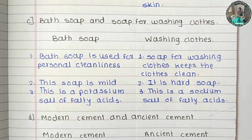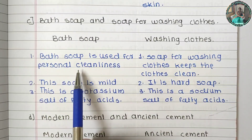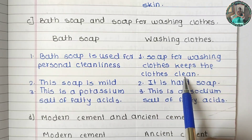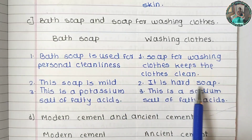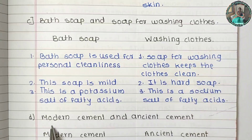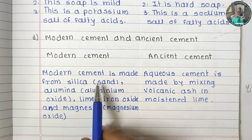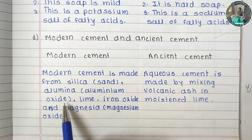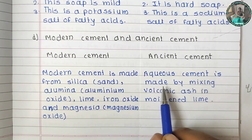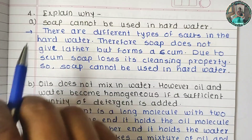Soap is used for personal cleaning and washing clothes. There are mild soaps (potassium salt of fatty acid) and hard soaps (sodium salt of fatty acid). Regarding modern and ancient cement: modern cement is made from silica (sand), aluminium oxide, lime, iron oxide, and magnesium oxide, while ancient cement was made by mixing volcanic ash with moistened lime.